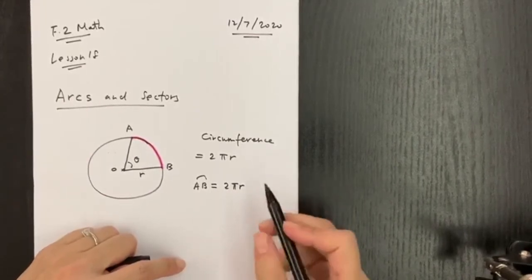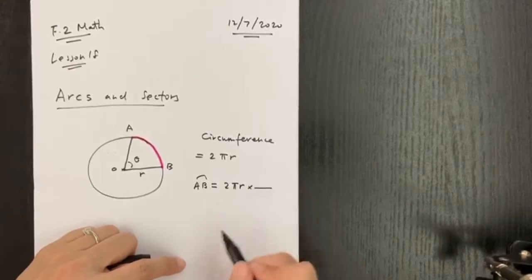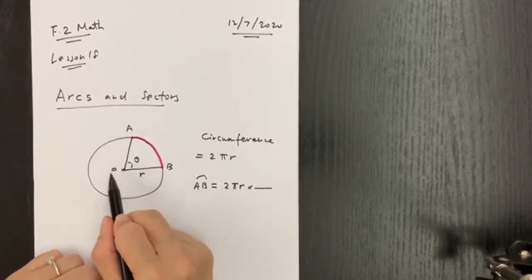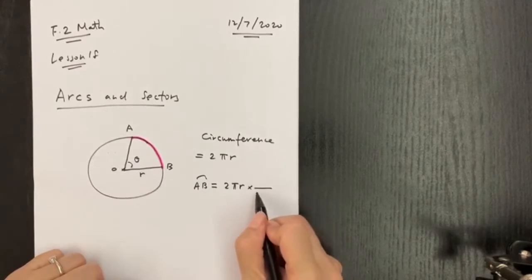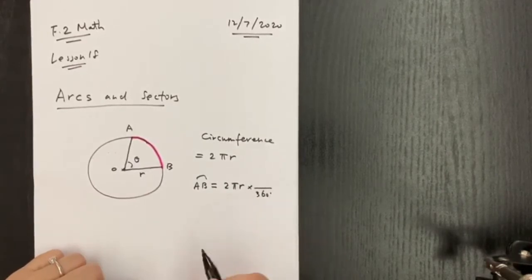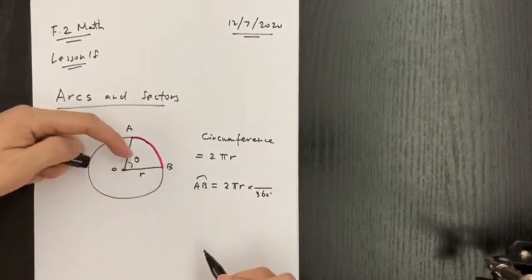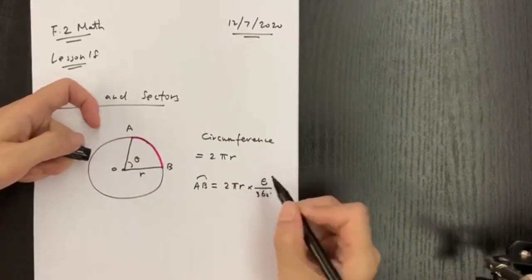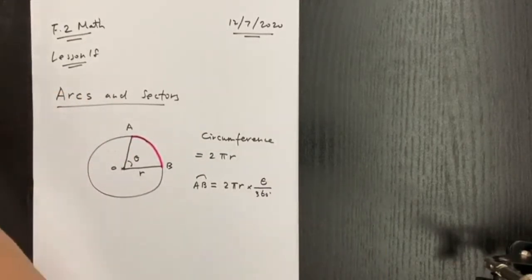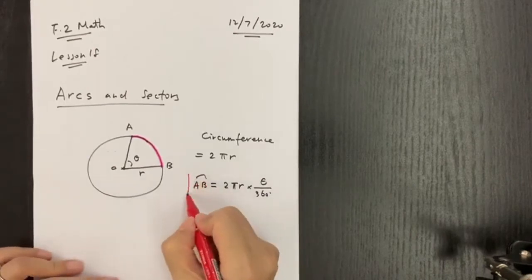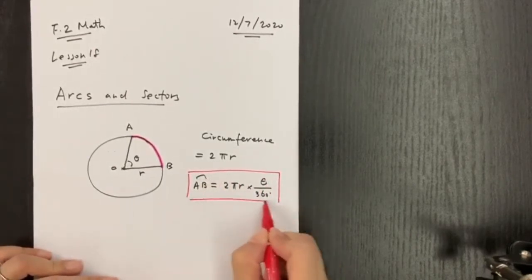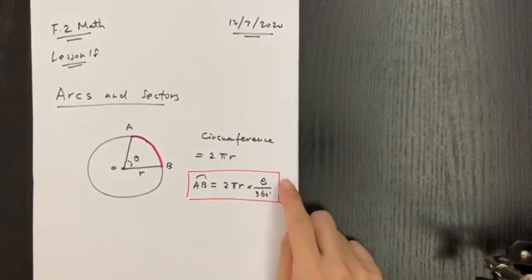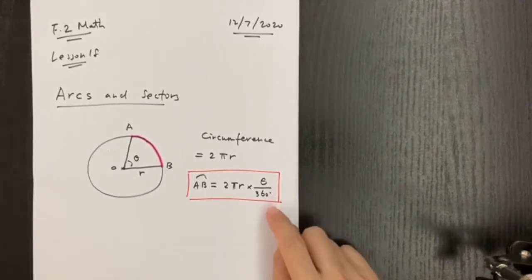Since an arc is only part of the circle, and the total circle is 2πr, we consider that a full round angle is 360 degrees. We only look at part of it, which corresponds to angle theta. So here we have the formula to work out the arc length, which is equal to 2πr times theta over 360.